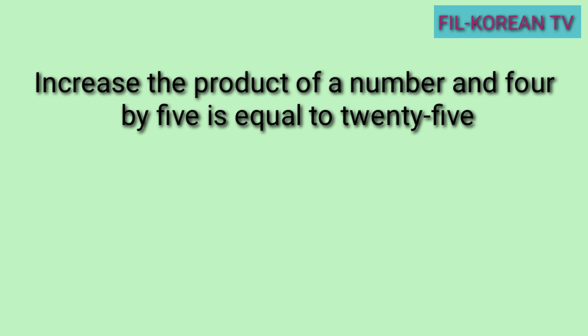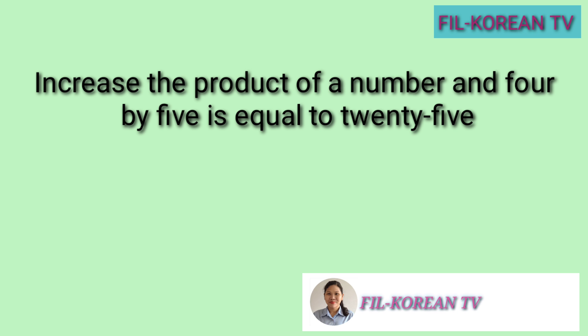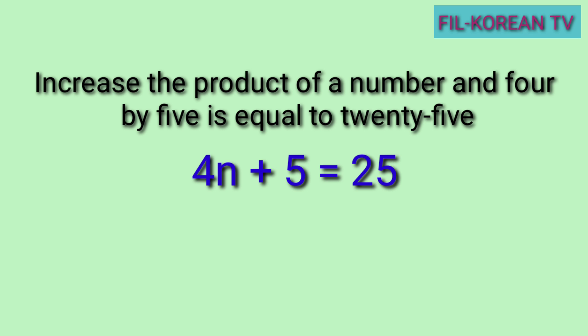Another problem: increase the product of a number and four by five is equal to twenty-five. Ibig sabihin, ang product ng number at four, dagdagan ng five, equals twenty-five. Ito yung equation: 4n + 5 = 25. Yung n, yan ang variable na nagre-represent sa 'a number.' Pwede ninyong gamitin ang kahit anong letter. Yung four n, dahil magkatabi sila, times yan — kasi yung product, answer yan sa multiplication. At yung word na increase, ibig sabihin yan ay mag-plus.